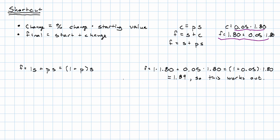This gives us a general equation for percent change. The final value is 1 plus the percent change times the starting value. If we're using a calculator, we can always use this formula. Let's see some examples of this formula in action.